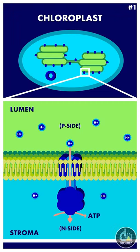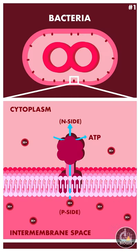In chloroplast, the lumen of the thylakoid becomes the P-side and the stroma becomes the N-side. In bacteria, the intermembrane space becomes the P-side and the cytoplasm becomes the N-side.